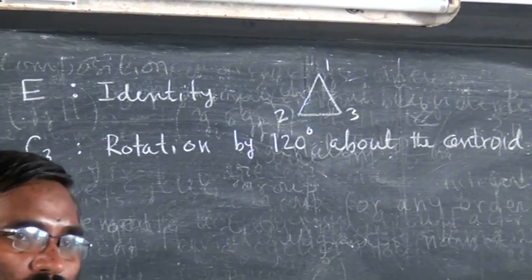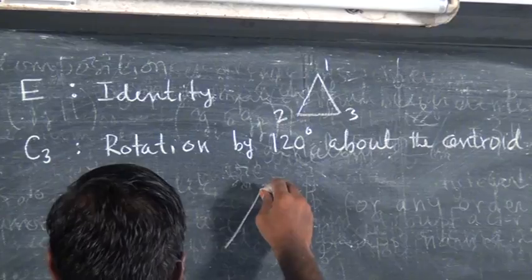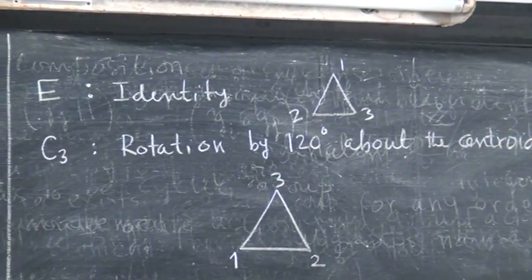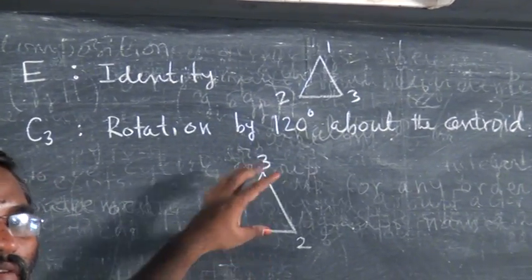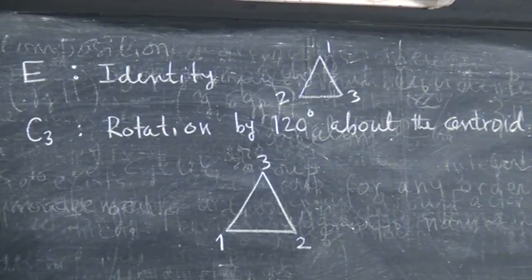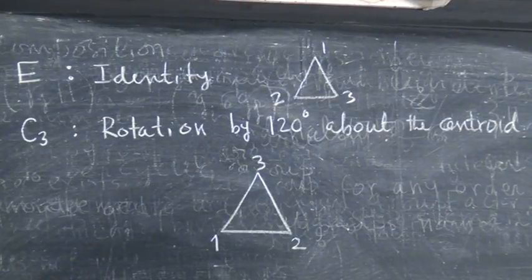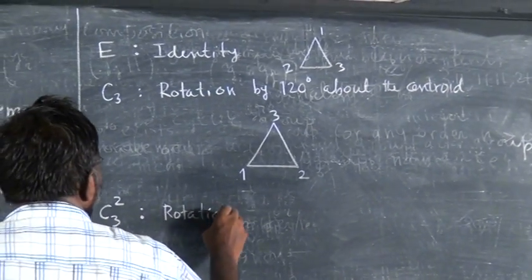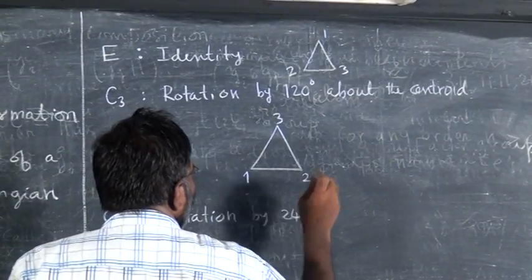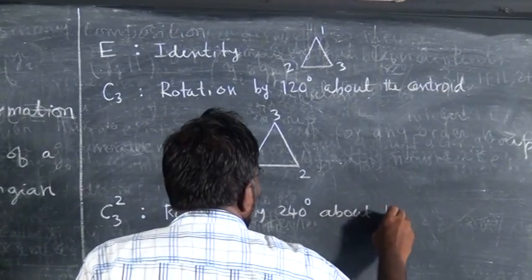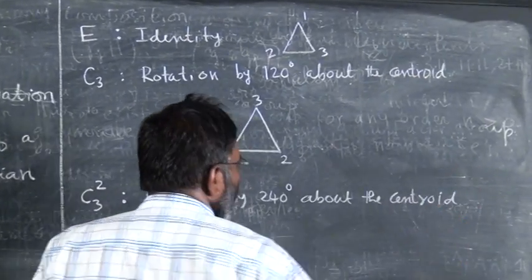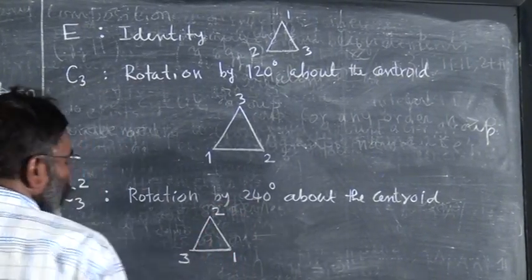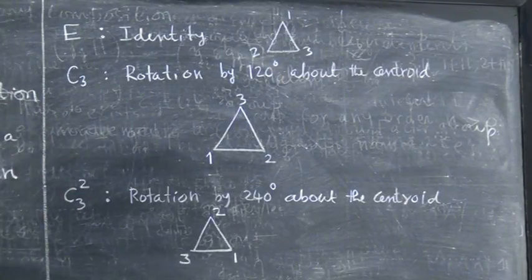If I rotate it, what will happen? The labels will change. What will happen? 1 will come here, 2 will come here, and 3 will come here. The object will undergo a rotation where these labels which we have kept there for bookkeeping purposes would have changed like this. I do once again a rotation that I will call it as C3². That means 2 times C3. This is rotation by 240 degrees about the centroid. This will give me a picture: 1 will come here, 2 will come here, 3 will come here.